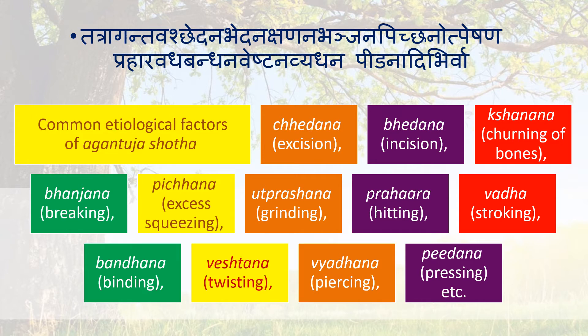Common etiological factors of Agantuja Shotha are: Chetana (exogenous contact), Bhedana (incision), Shanana (churning of bone), Bhanjana (breaking), Peedana (excess squeezing), Utpeshana (grinding), Prahara (hitting), Vadha (striking), Bandana (binding), Vestana (twisting), Vyadana (piercing), Peedana Prasim, etc.